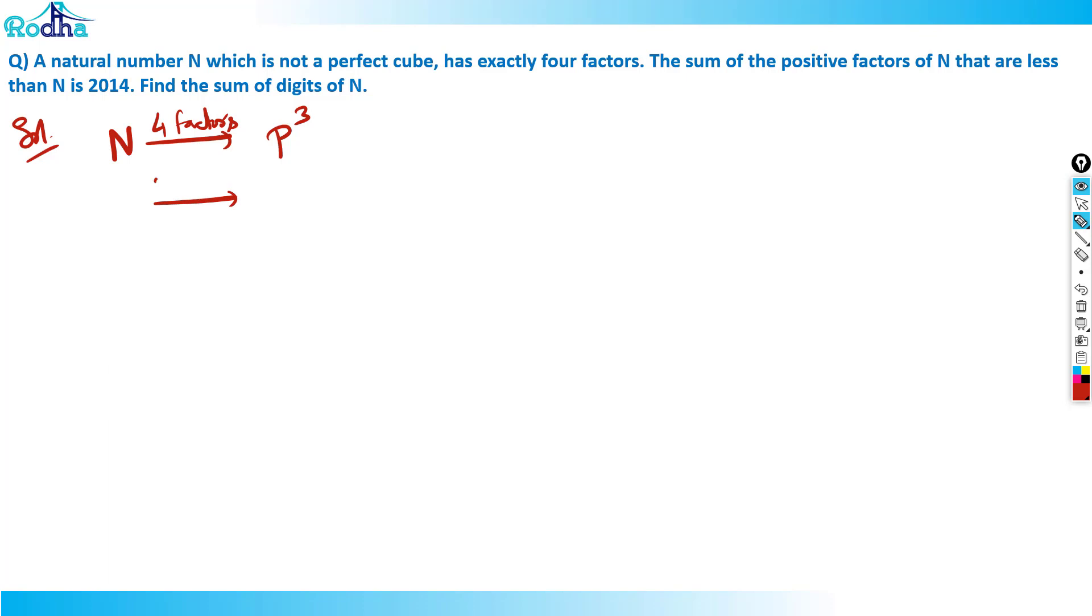It could be p1 raised to one and p2 raised to one, because p1 has factor two so power one, p2 has factor two so power one. But it says it's not a perfect cube, so that means the p cubed case is not possible. That means we're going with the p1 times p2 form.